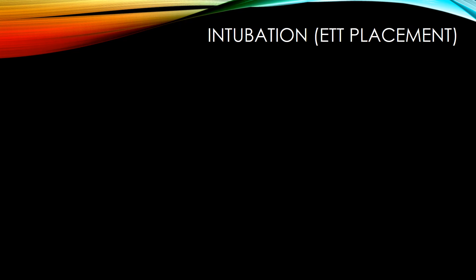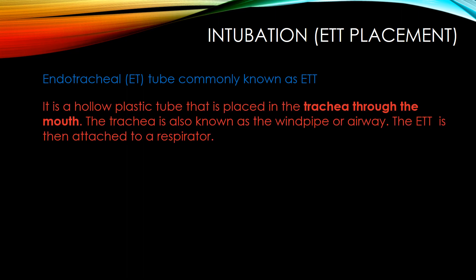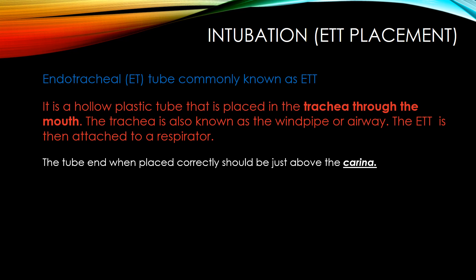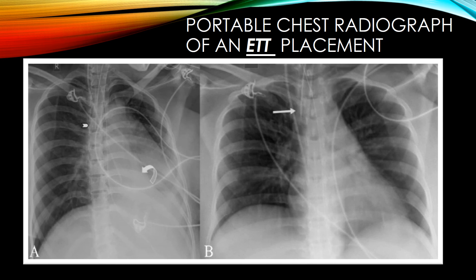Intubation: ET tube placement. A tracheal ET tube, commonly known as ETT, is a hollow plastic tube placed in the trachea through the mouth. The trachea is also known as the windpipe or airway. The ET tube is then attached to a respirator, and when placed correctly, the tip should be positioned just as indicated where the arrow is.